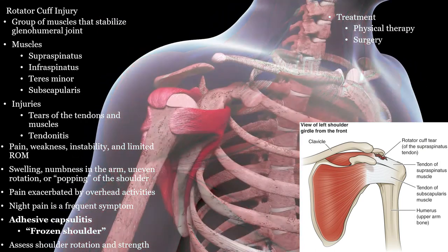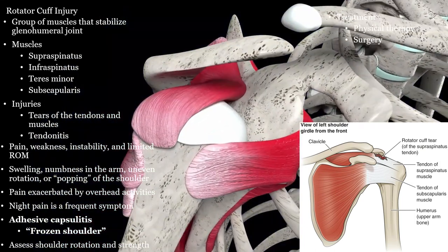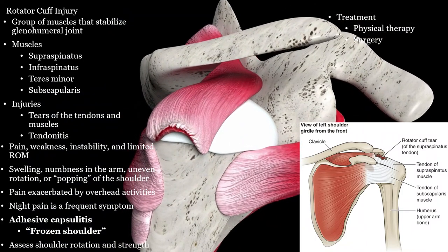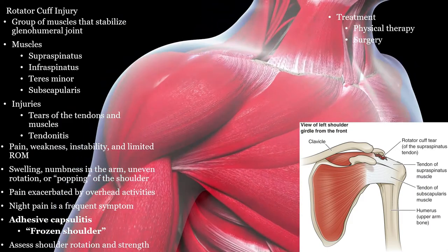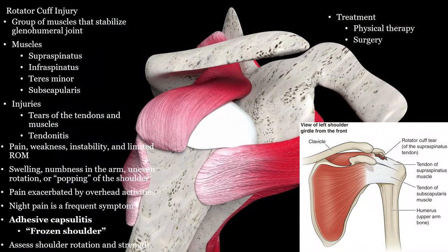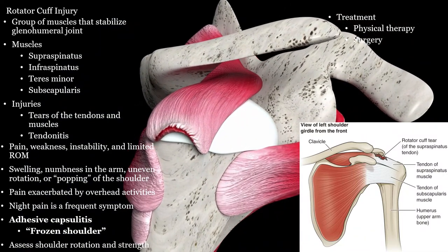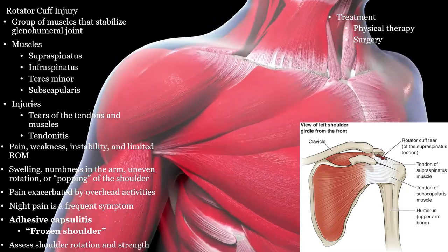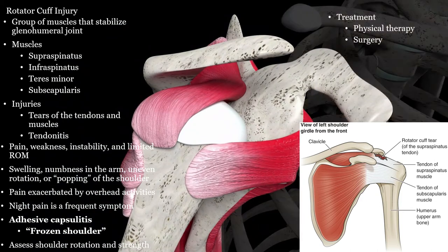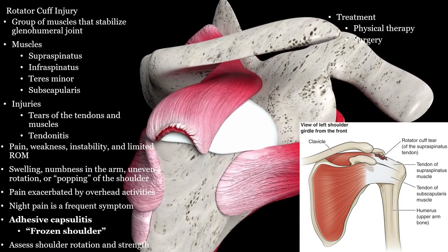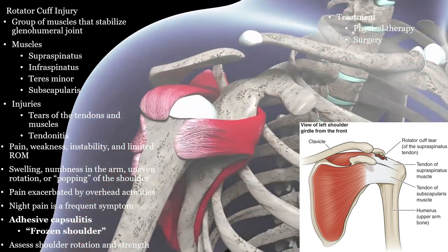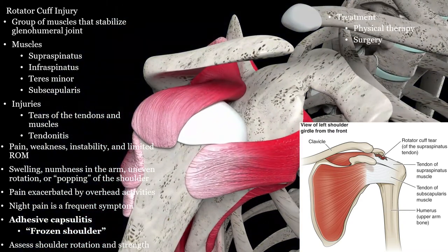The rotator cuff of the shoulder is a frequent site of injury. A tear of the rotator cuff muscle or tendons can occur with only minor injuries. These can heal over time with physical therapy or may need surgery. The muscles of the rotator cuff can be remembered with the mnemonic SITS: supraspinatus, infraspinatus, teres minor, and subscapularis. A frozen shoulder, called adhesive capsulitis, cannot move easily and needs physical therapy. There are several shoulder exam tests to check for a rotator cuff problem.